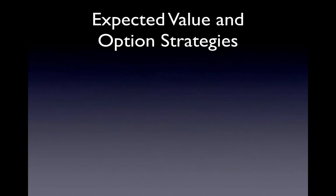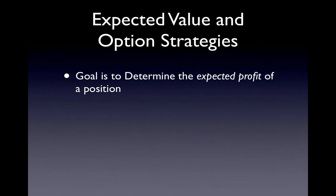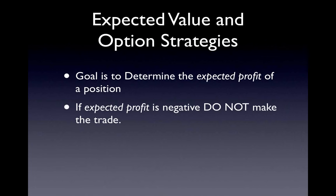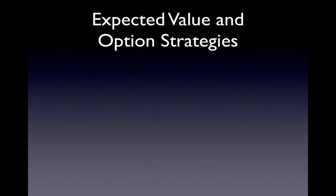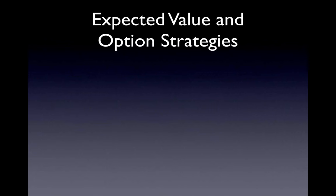How does this pertain to trading options? Recalling the definition of expected value — the weighted average value of a random variable — we first need to determine which variable to model. Since the goal of placing a trade is to earn a profit, we want to determine the expected profit before putting on the trade. If the expected profit is positive, on average we can expect to make a profit. If the expected profit is negative, we should not do the trade. Since the value of an option is partially derived from the price of the underlying, we can use the underlying price as the random variable.